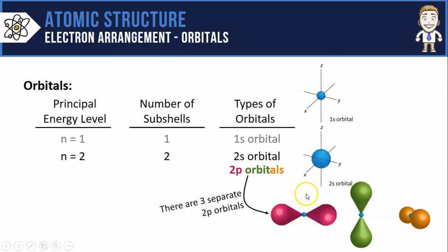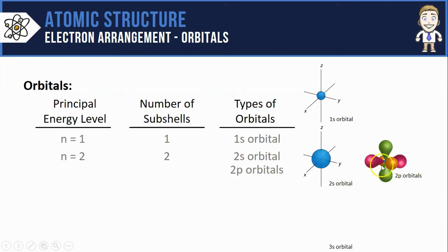Again, you're just imagining that these purple, green, and orange regions are where electrons are most likely to be found. These three 2p orbitals do have names. The 2px, the 2py, and the 2pz. If you put all three of them surrounding the nucleus at the same time, they look like this.